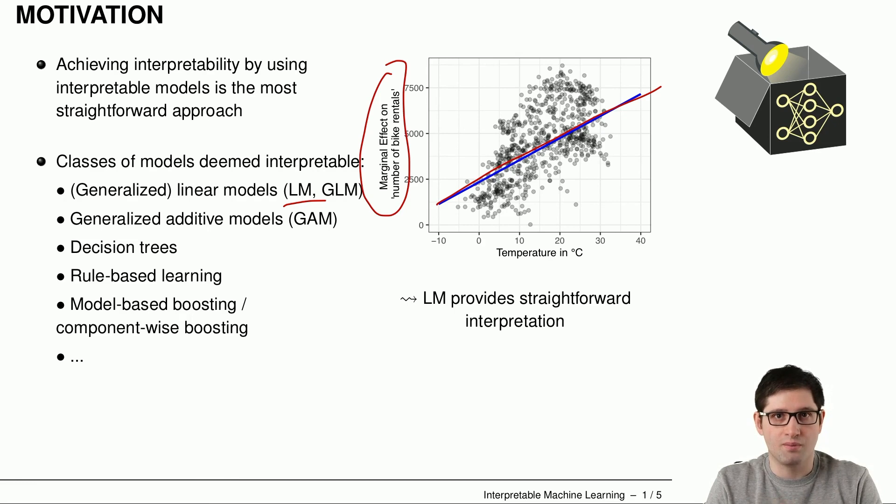In this example, we see that there's a linear line that tries to estimate the effect or the relationship between the temperature and the number of bike rentals. If you are interested in how does the temperature affect the number of bike rentals, you can just use linear regression, which gives you this line that you see here to get an understanding of the model.